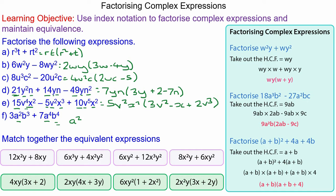And finally, a squared is the common factor of a squared and a to the power of 4, and b cubed is the common factor of b cubed and b to the power of 4. So a squared b cubed is the highest common factor. Times that by 3, plus 7a squared b to make b to the power of 4.